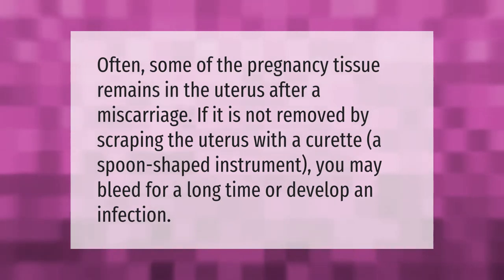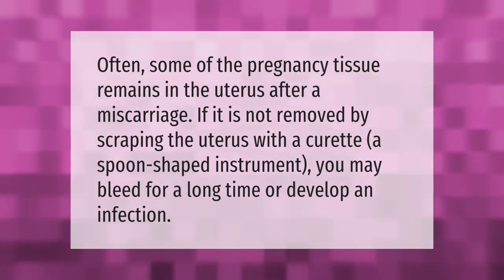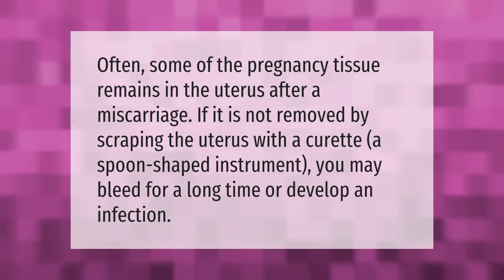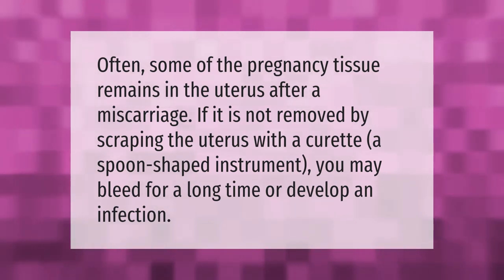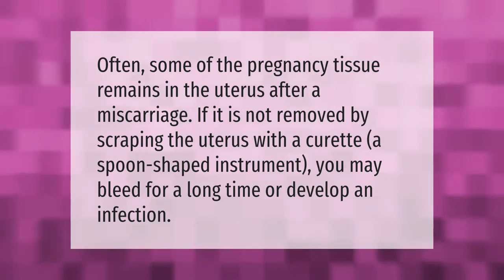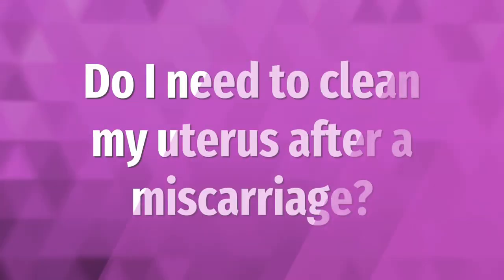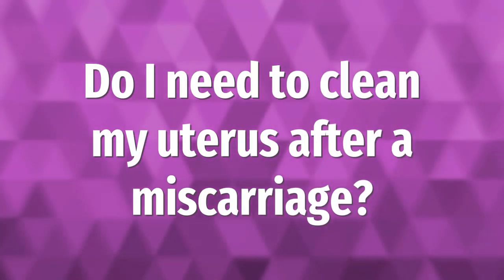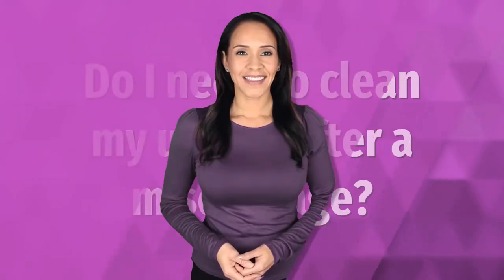Often some of the pregnancy tissue remains in the uterus after a miscarriage. If it is not removed by scraping the uterus with a curette — a spoon-shaped instrument — you may bleed for a long time or develop an infection.